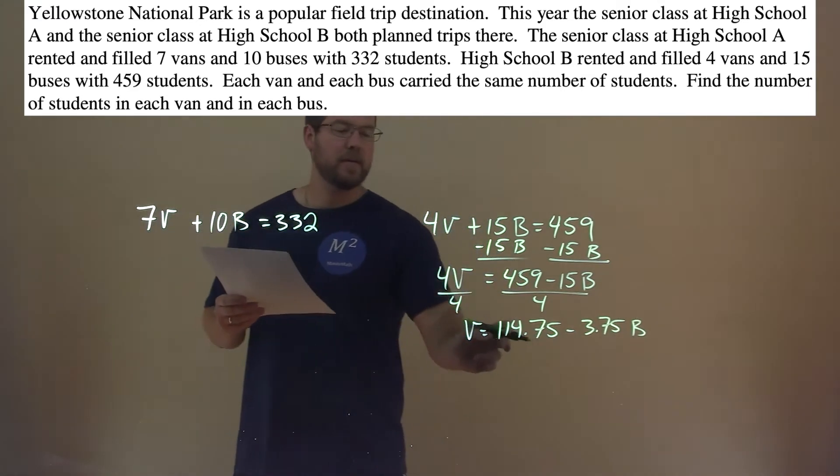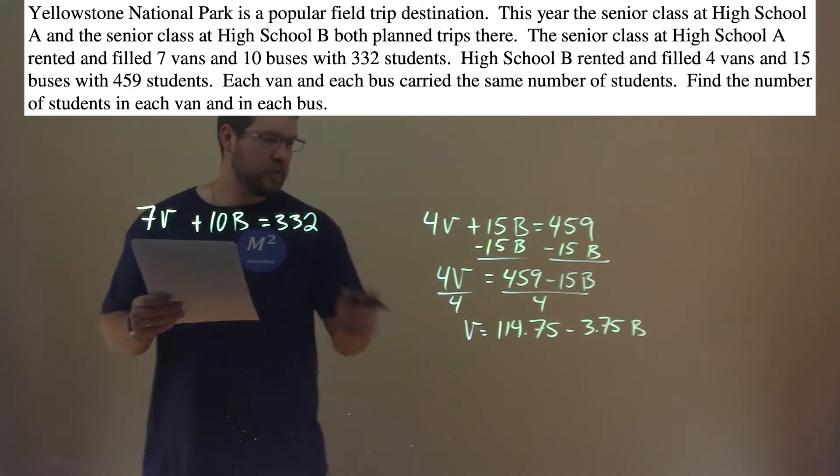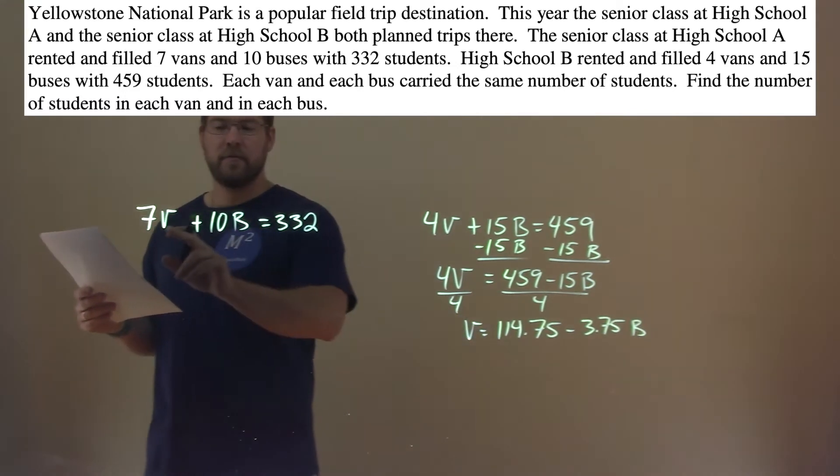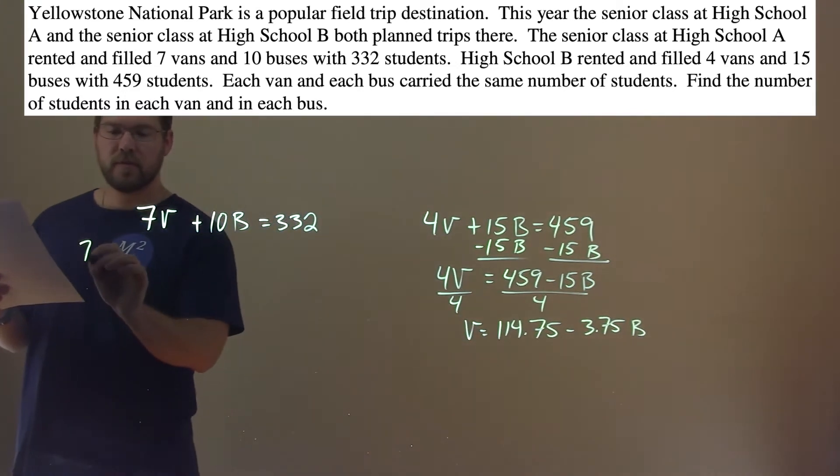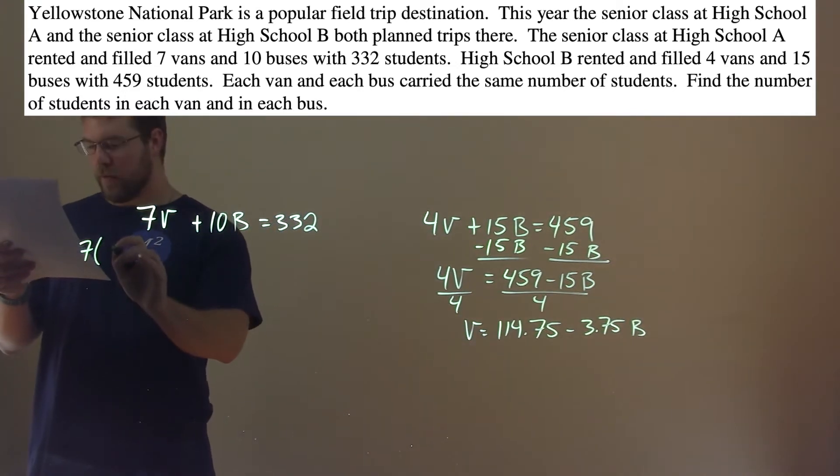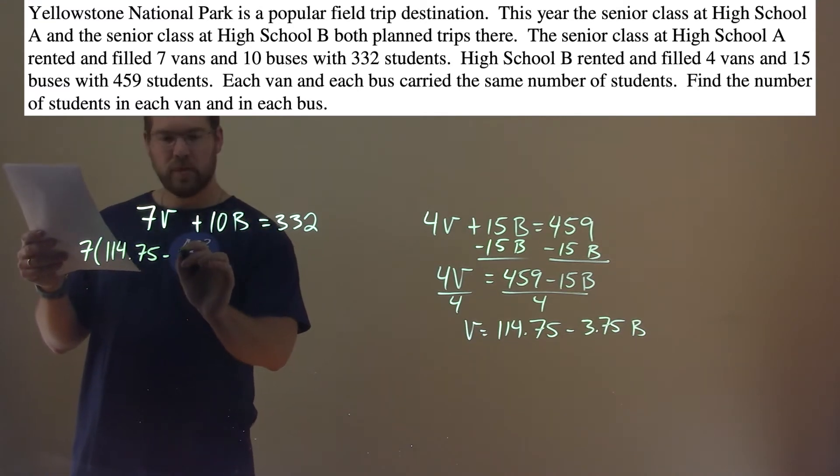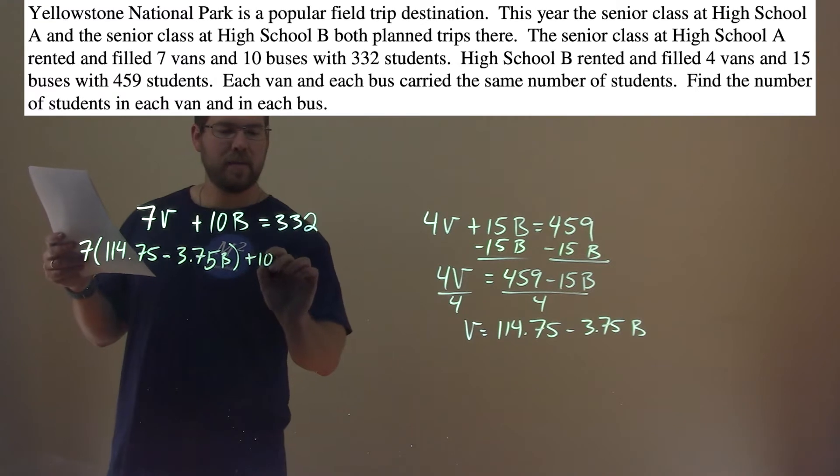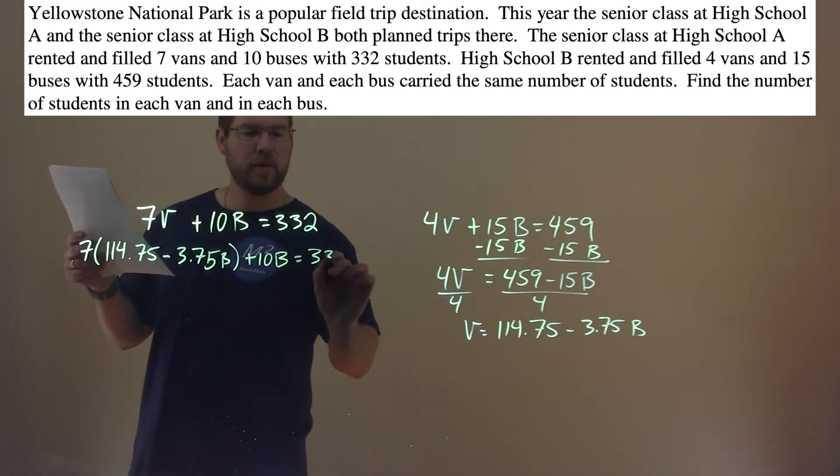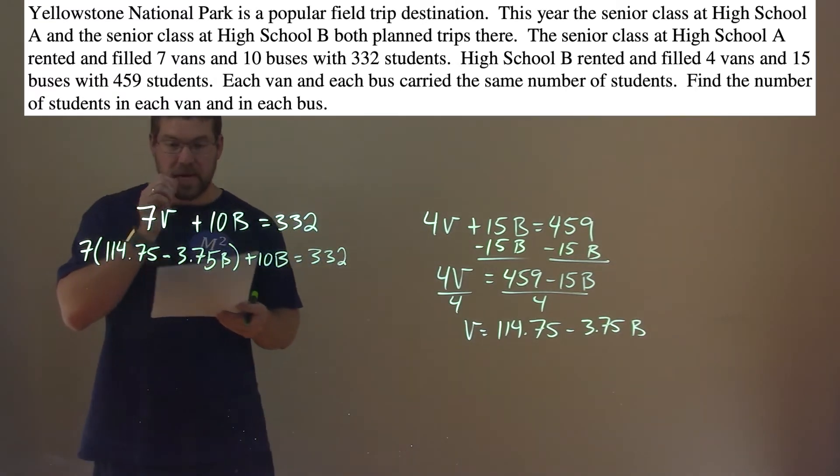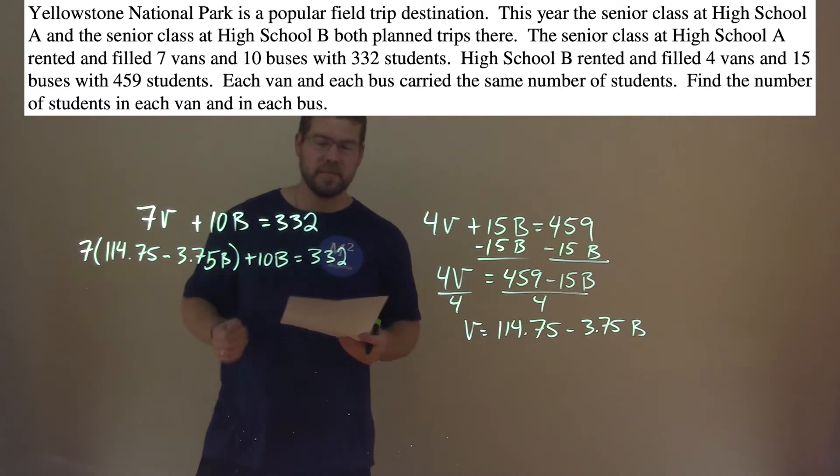We now have v completely by itself here, and so we're going to substitute that in for this v. So 7 times, bring over that 114.75 minus 3.75b plus 10b equals 332. And now we have an equation with one variable, and let's go solve for it.